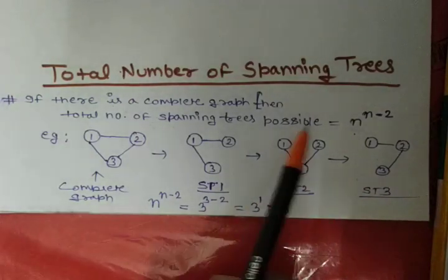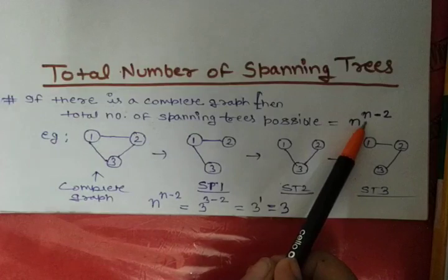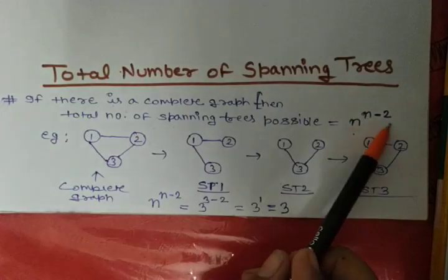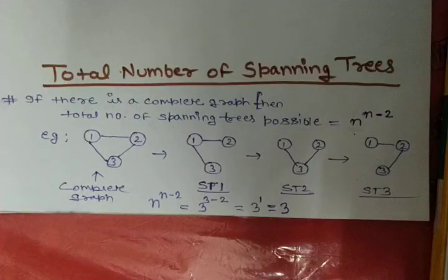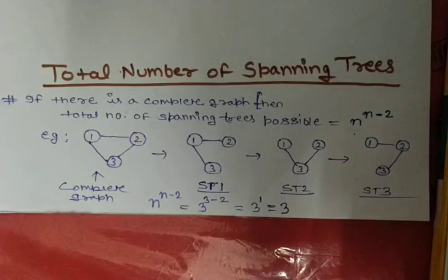In case of a connected graph, you can use this formula which is n raised to power n-2. But in case of a graph which is not connected, we have to perform different things. So now I will explain how to find the number of spanning trees a graph can have in case of a graph which is not connected.